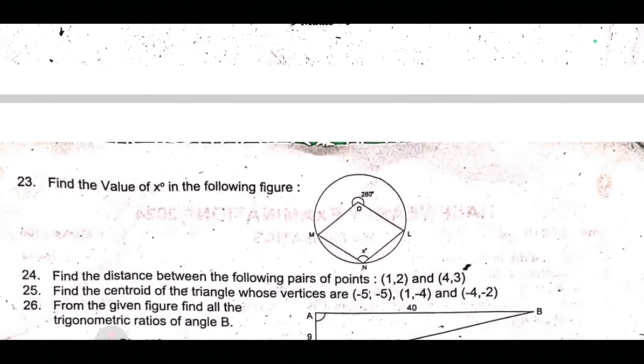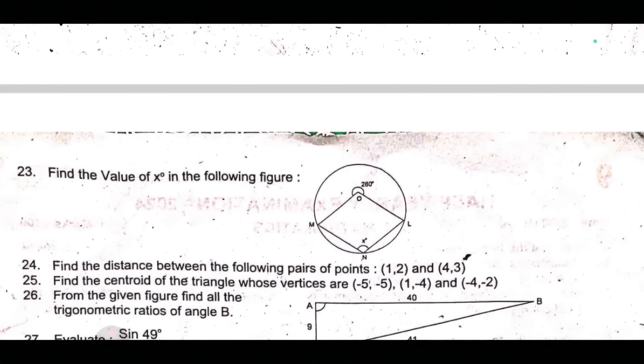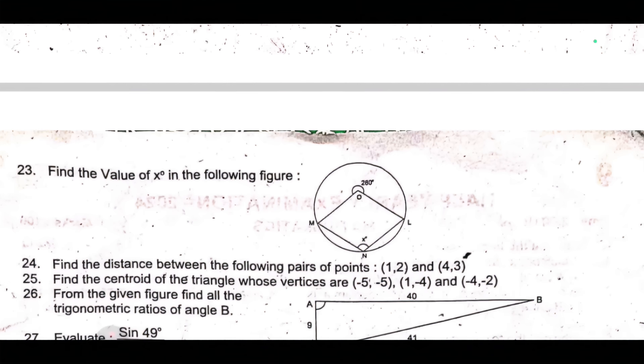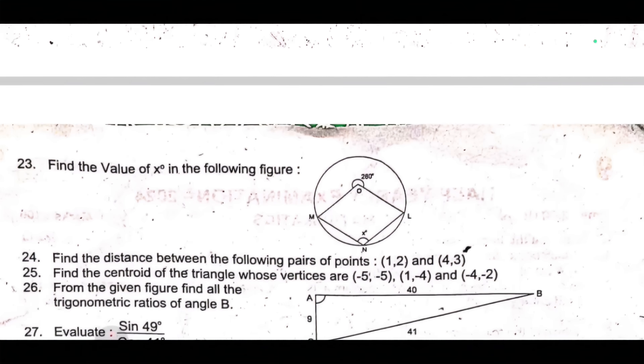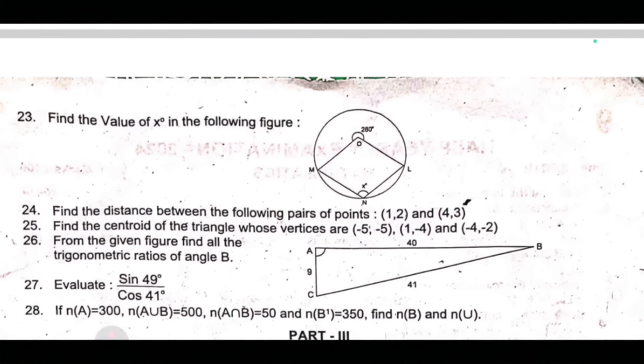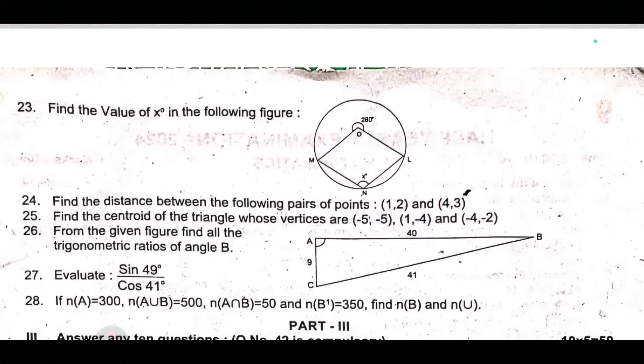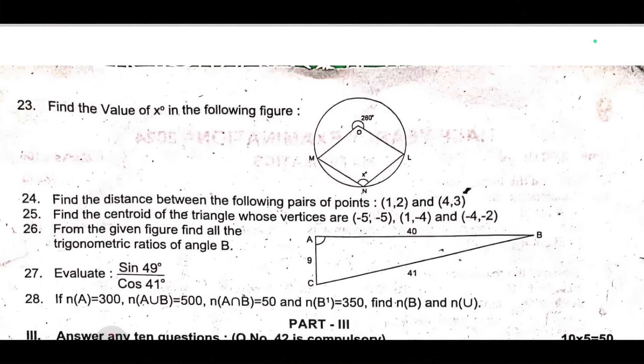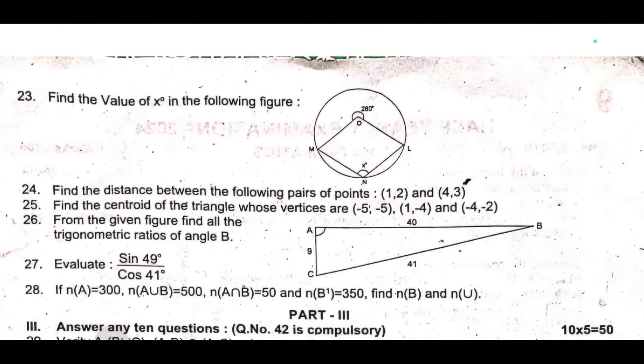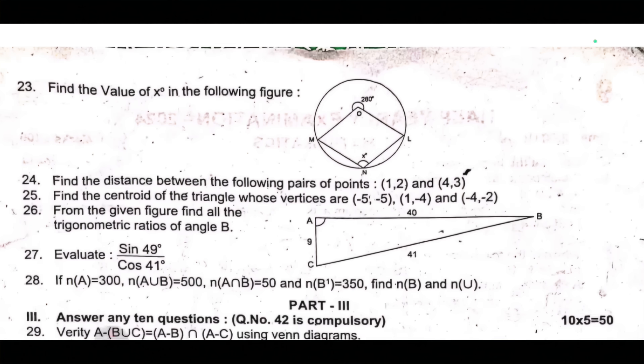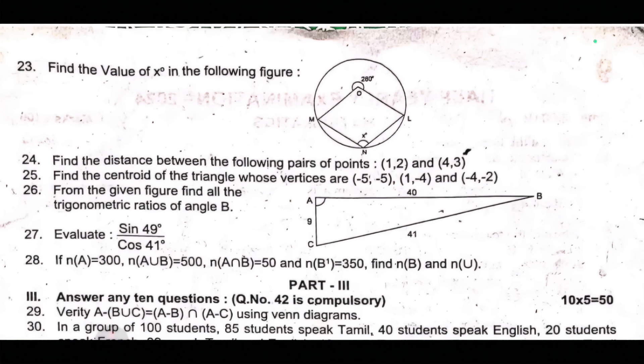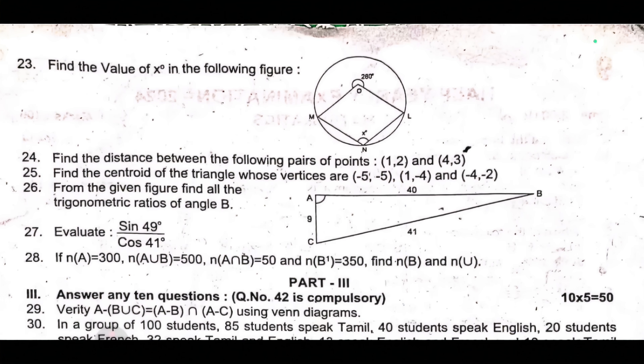Twenty-third, find the value of x° in the following figure. Twenty-fourth, find the distance between the following pairs of points (1, 2) and (4, 3). Twenty-fifth, find the centroid of the triangle whose vertices are (-5, -5), (1, -4), and (-4, -2). Twenty-sixth, from the given figure, find all the trigonometric ratios of angle B. Twenty-seventh, evaluate sin 49° by cos 41°.